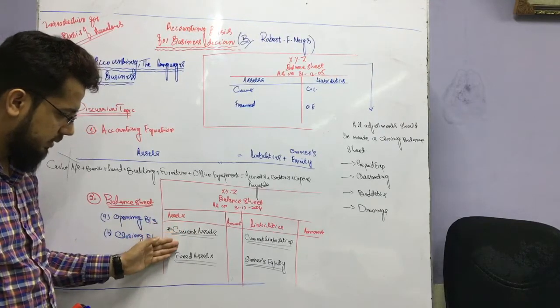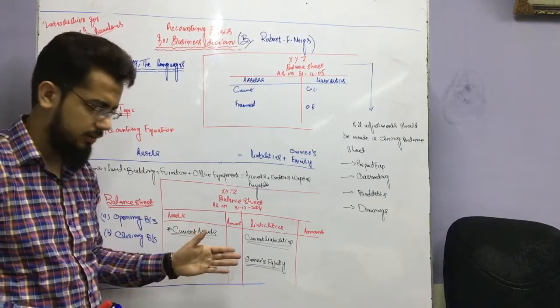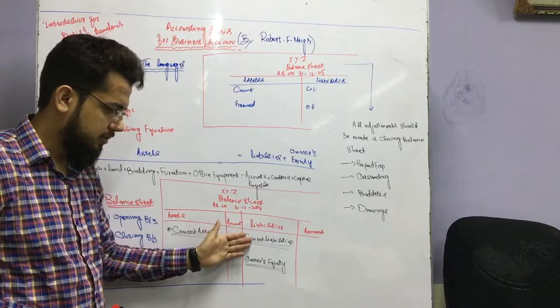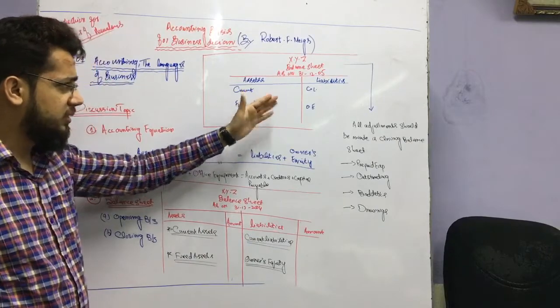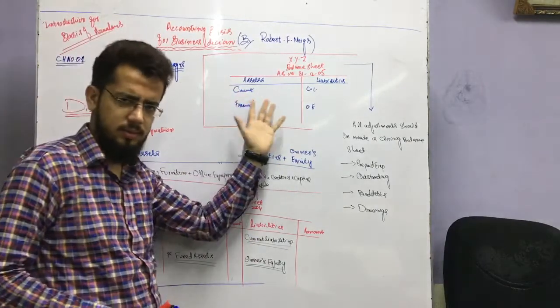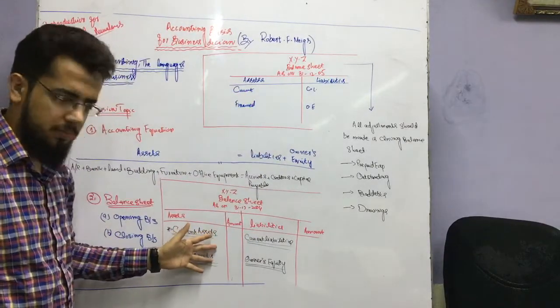Opening balance sheet is assets - current and fixed assets - and on the other side liabilities. Closing balance sheet is all that is in the opening balance sheet.